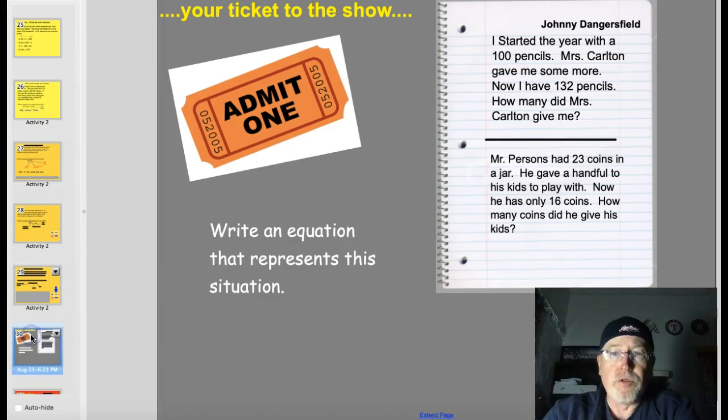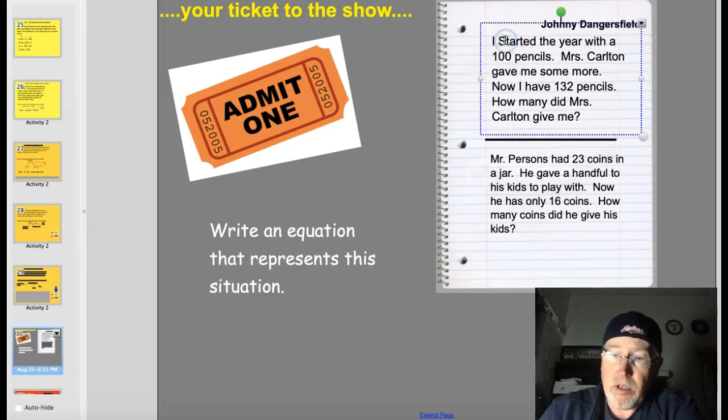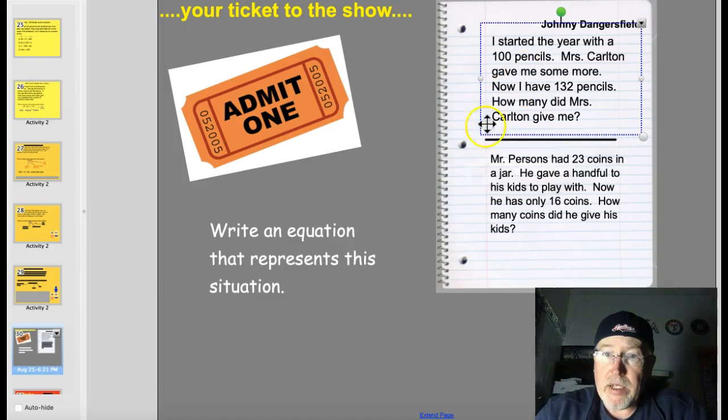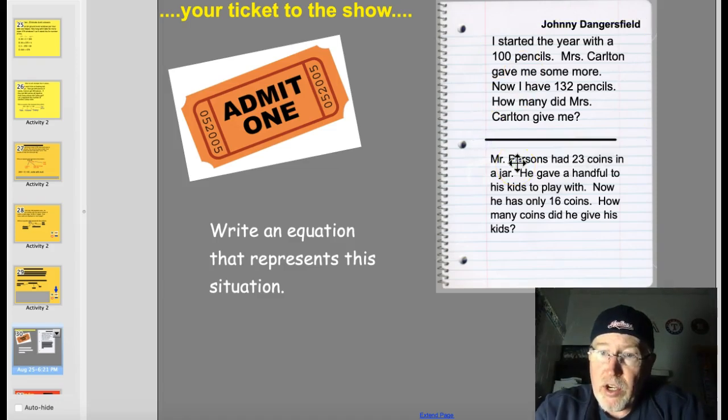All right, your two ticket to the show problems. I started the year with 100 pencils. Mrs. Carlton gave me some more. Now I have 132. How many did Mrs. Carlton give me? And Mr. Persons had 23 coins in a jar. He gave a handful to his kids to play with. Now there are only 16 coins. How many coins did he give his kids? Why don't you pick the variables and stuff for that?